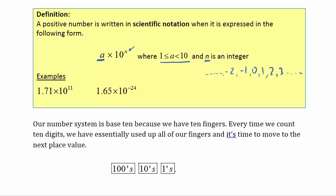Looking at our examples: the national debt is 1.71 times 10 to the 11th power — notice just one digit to the left of the decimal. Similarly, the proton mass is 1.65 times 10 to the negative 24th — again just one digit in front of the decimal. We only want single digits in front of the decimal when we write things in scientific notation.